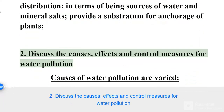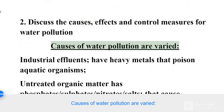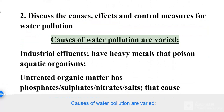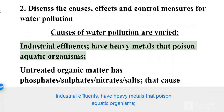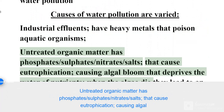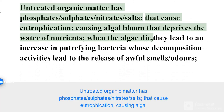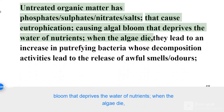Discuss the causes, effects, and control measures for water pollution. Causes of water pollution are varied. Industrial effluents contain heavy metals that poison aquatic organisms. Untreated organic matter has phosphates, sulfates, nitrates, and salts that cause eutrophication, causing algal bloom that deprives the water of nutrients when the algae die.